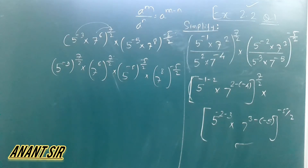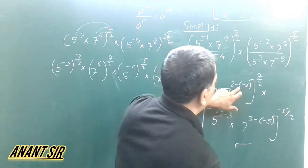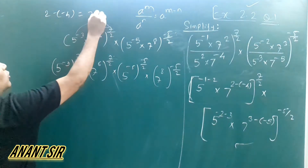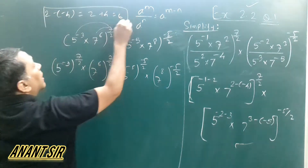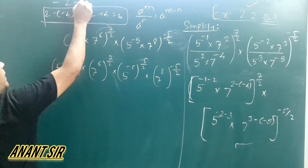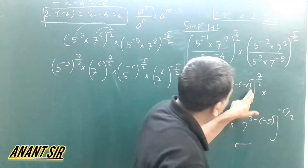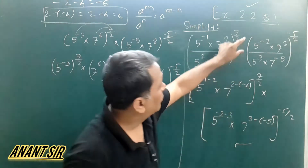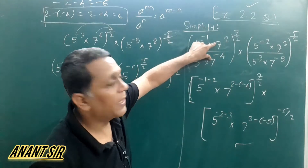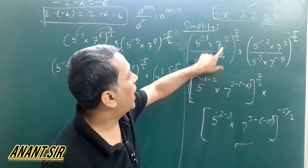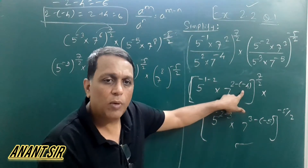So this is minus 6. So this is 7 raised to power minus 6. So this is 2 plus 4. So this is the power minus 4. First power minus second power: 2 minus minus 4 — minus minus is plus.